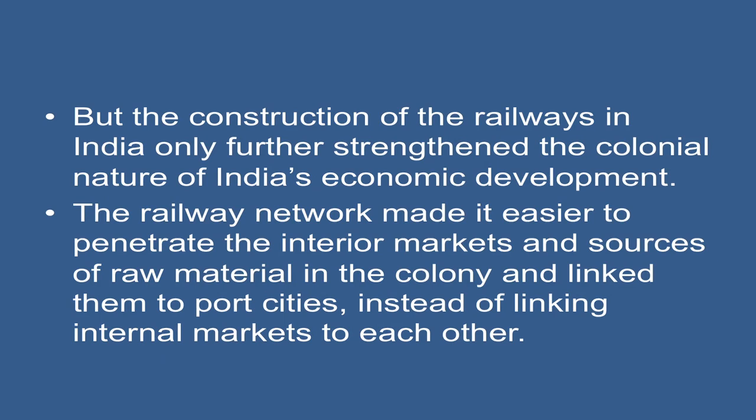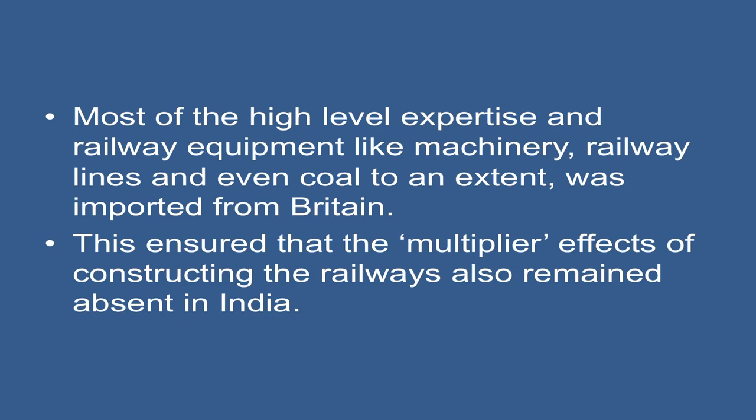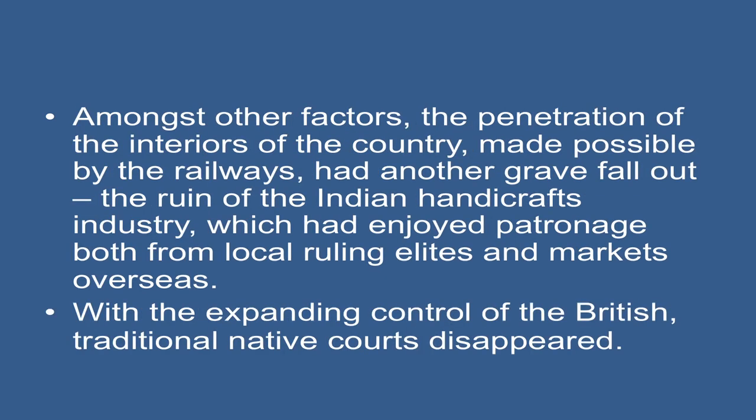In 1853, Lord Dalhousie took the decision to construct railways in India, but the construction of railways only further strengthened the colonial nature of India's economic development. The railway network made it easier to penetrate the interior markets and sources of raw material in the colony and linked them to port cities, instead of linking internal markets to each other. The railway network was thus primarily geared to serve the interest of foreign trade. Railway lines built in frontier regions would facilitate army movement, and some famine lines were built in scarcity areas. Moreover, the whole project was built with British capital, and investors in Britain were guaranteed five percent interest which was paid out of Indian revenue. Most of the high-level expertise and railway equipment — like machinery, railway lines, and even coal — was imported from Britain, thus ensuring that the multiplier effects of constructing the railways also remained absent in India.